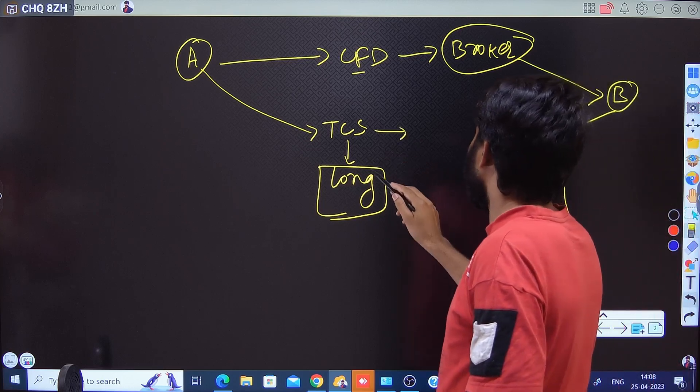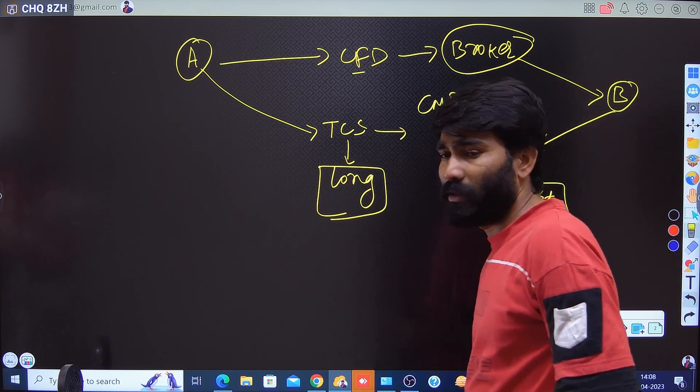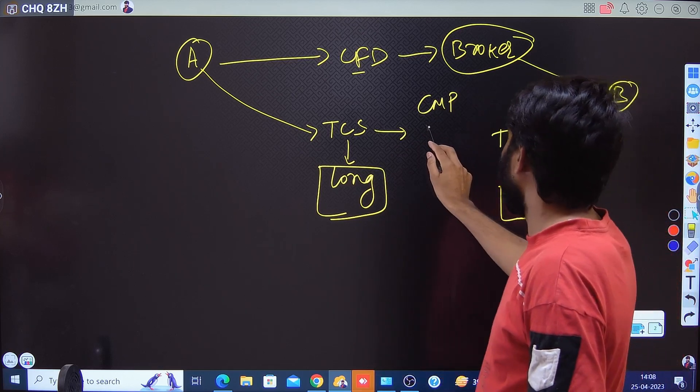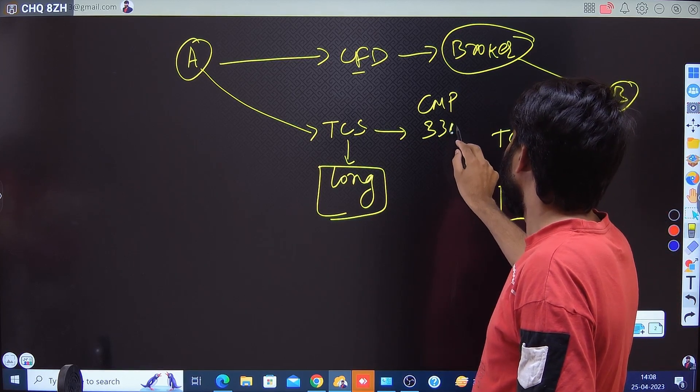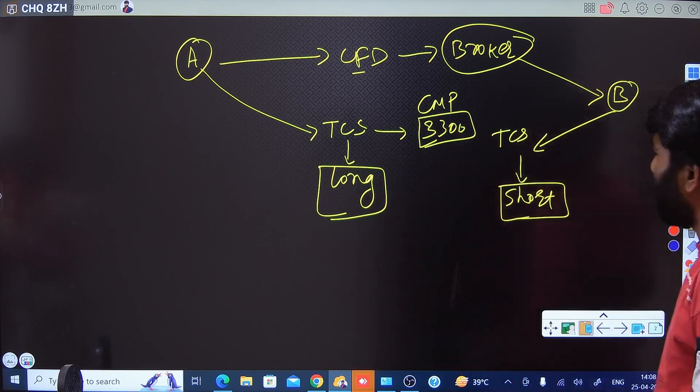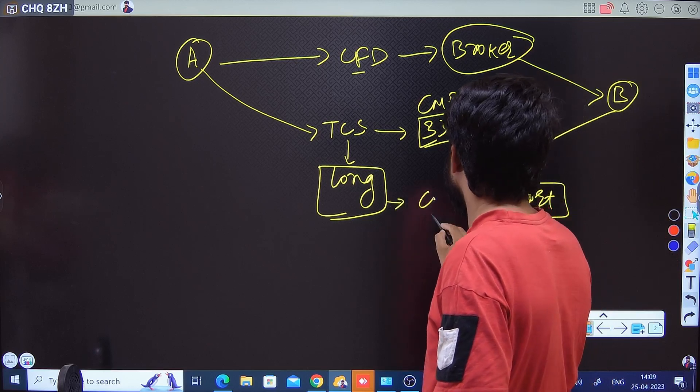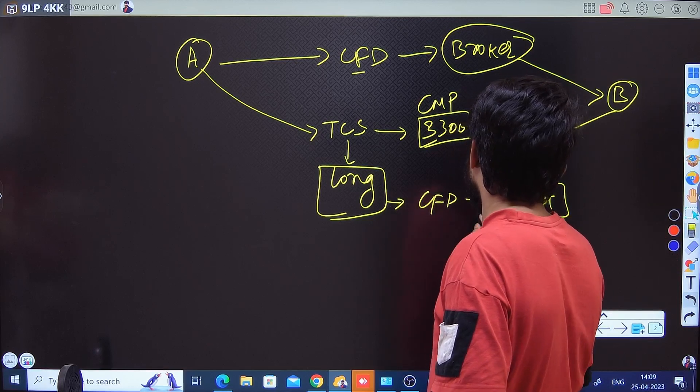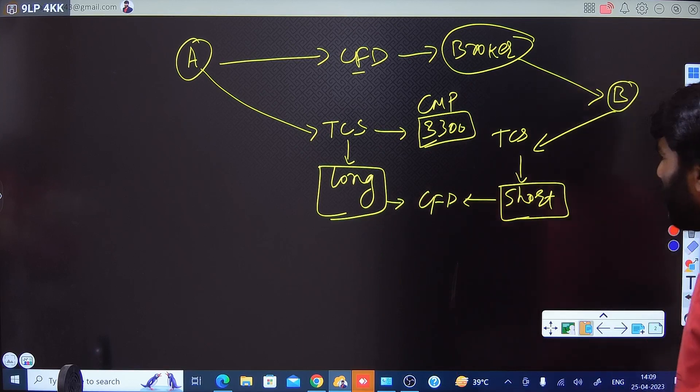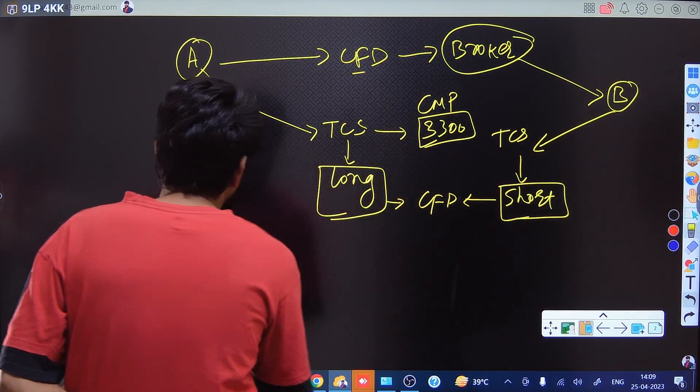Let's assume the market price, the current market price of TCS security is 3300. Then both the counterpart parties will sign the CFD.